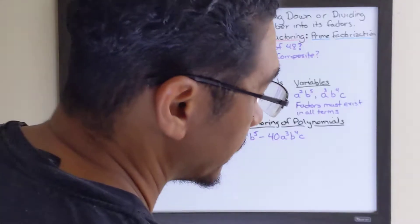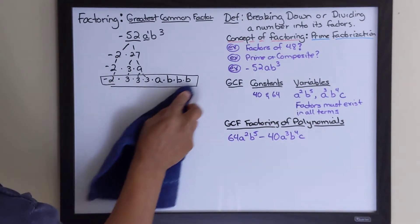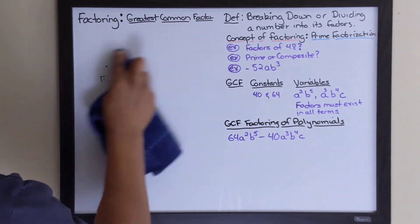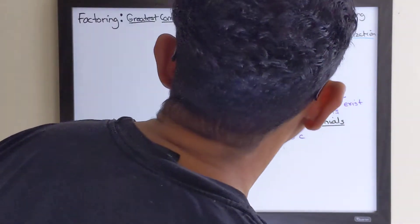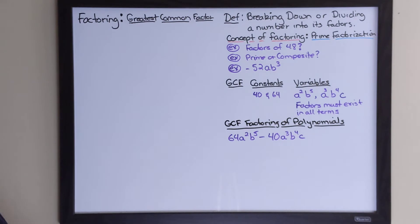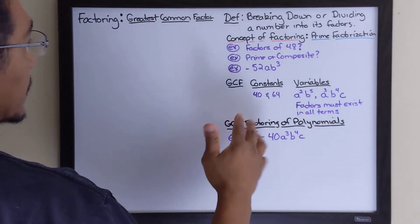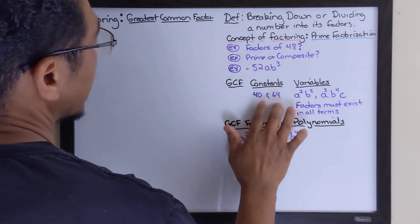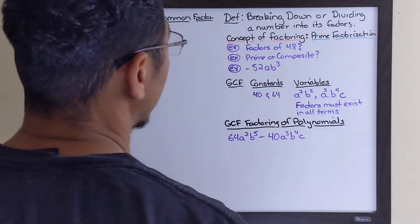Now let's get into what's known as the greatest common factor. By definition, the greatest common factor is the common factor between whatever numbers you're comparing, and it's the biggest one you can find.